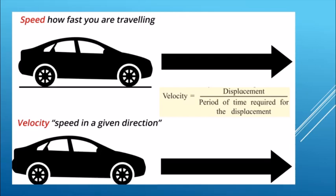Next is speed and velocity. For example, we say the speed of a truck is 40 kilometers per hour — that means the truck is travelling 40 kilometers in an hour. So in speed we calculate the distance. Speed is the distance travelled per unit time. The formula is: speed equals distance divided by time. So 40 kilometers covered in 1 hour gives us 40 divided by 1, which is 40. So this is called speed.